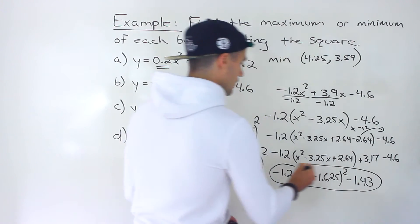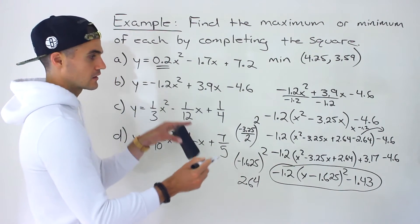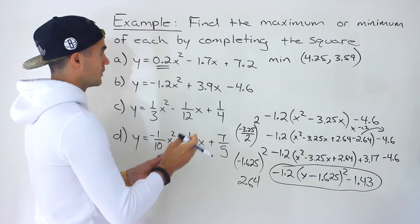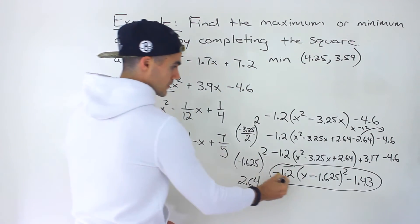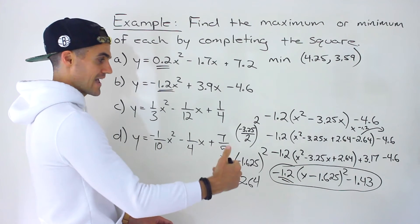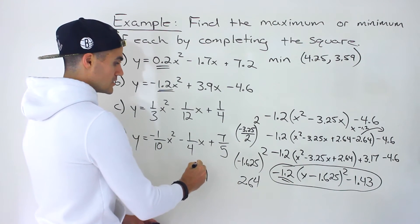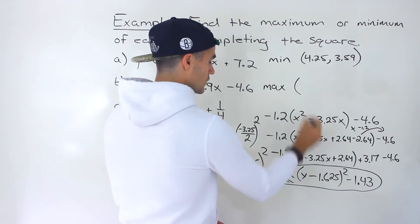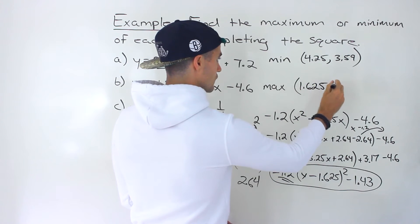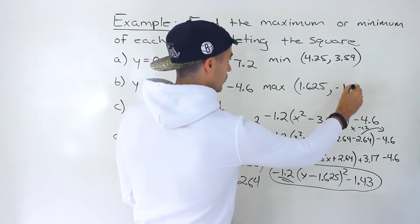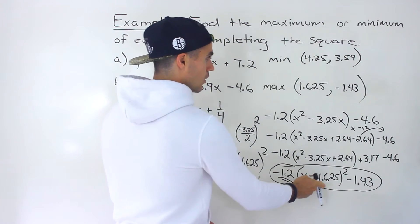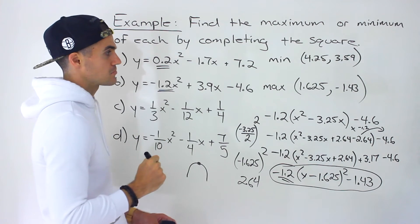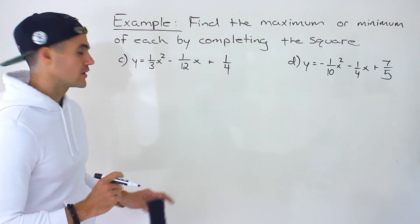We now have that quadratic in vertex form. The 'a' value is negative, meaning the parabola opens down, so we're dealing with a maximum. The full vertex is 1.625 and negative 1.43 — remember the sign always changes from inside the bracket. That's the max point for part b.